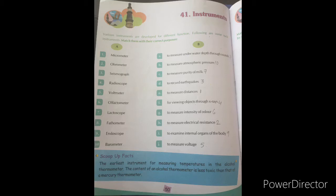And third one is seismograph. Third point number is D, to record earthquake. Seismograph is used to record earthquake. Right.